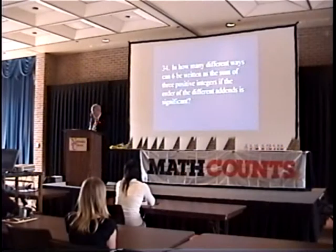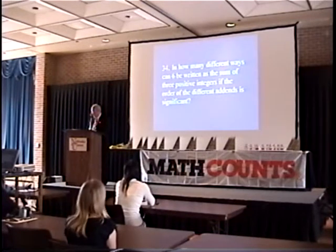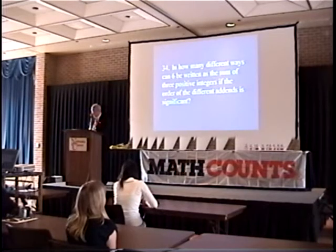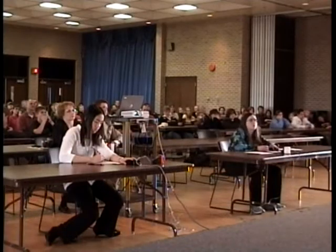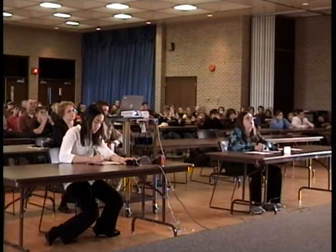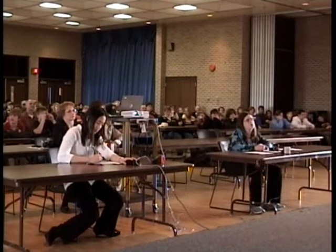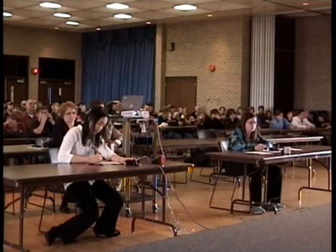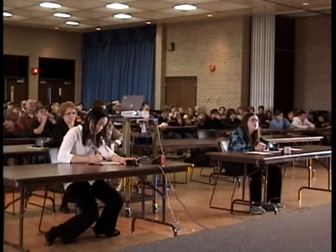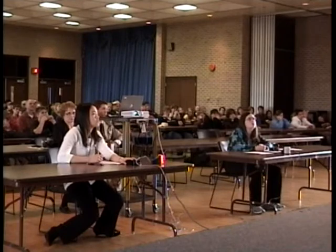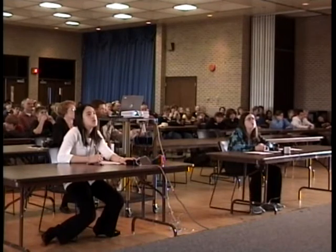In how many different ways can 6 be written as the sum of 3 positive integers if the order of the different addends is significant? Katie? 6. 6 is incorrect. 8. 7 is also incorrect. The correct answer is 10.